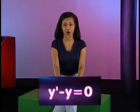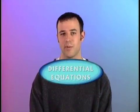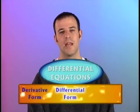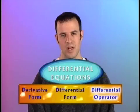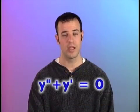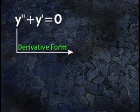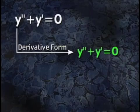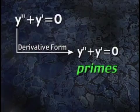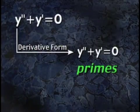But first, let's talk about form. Differential equations can be written in three different forms: the derivative form, the differential form, and the differential operator form. Let's take the differential equation y-double-prime plus y-prime equals zero and talk about form. In the derivative form, our equation would look like this, with the prime notation. See those little primey things? Those are primes, and that means we're looking at the derivative form.